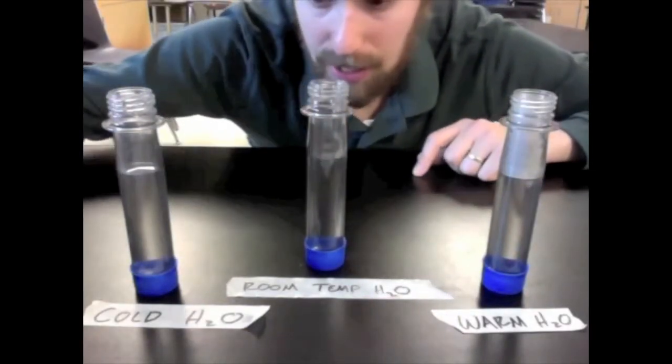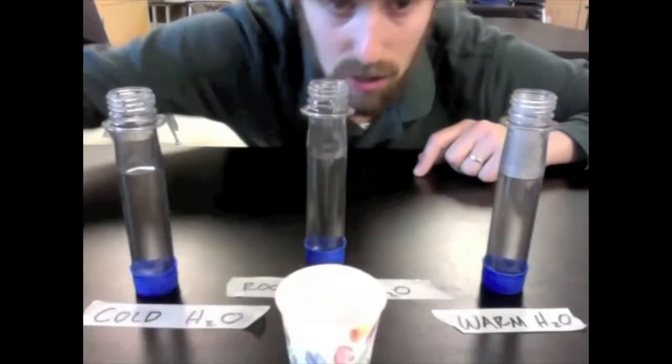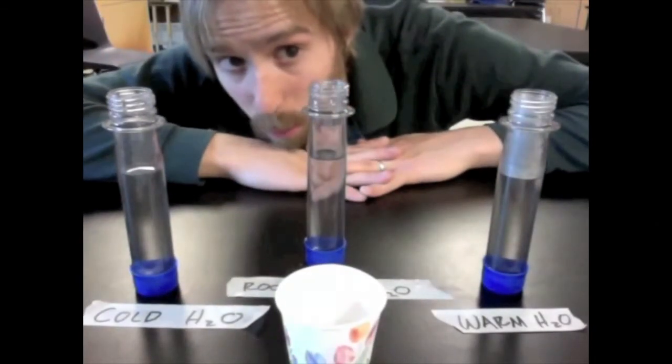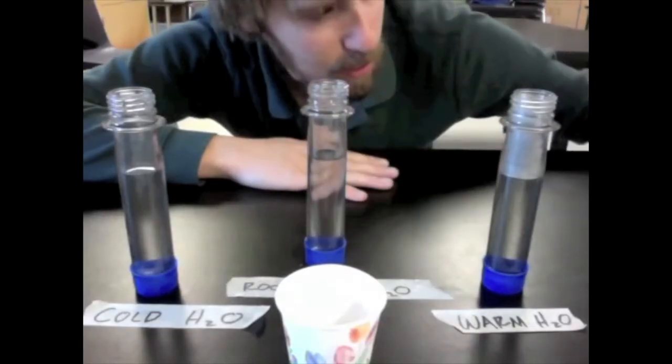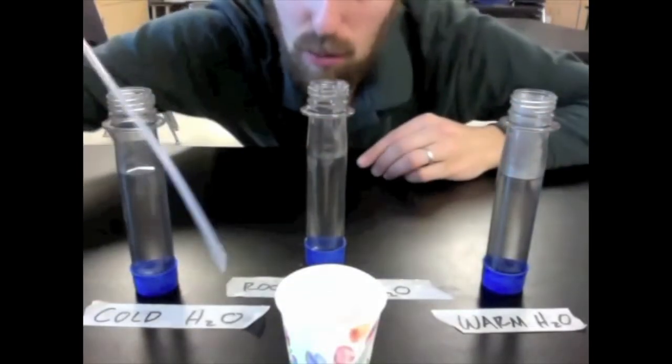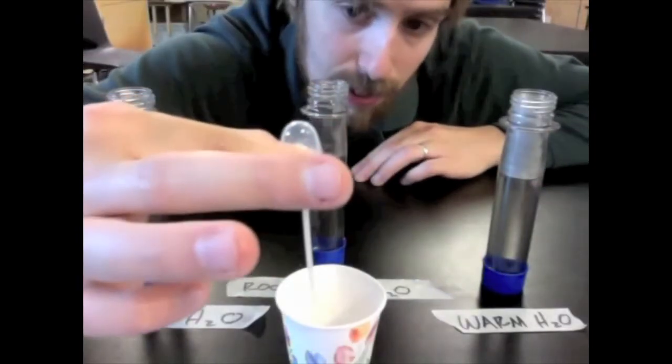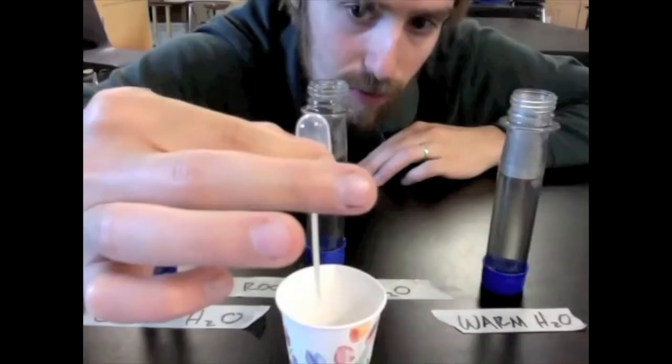Now what we're going to do here is take our yeast solution, which is just water, yeast, and a little bit of plain, everyday, white, granulated table sugar, and we're going to put a little bit of that into each one of these pipettes, hopefully just about the same amount in each so that we can control our variables.